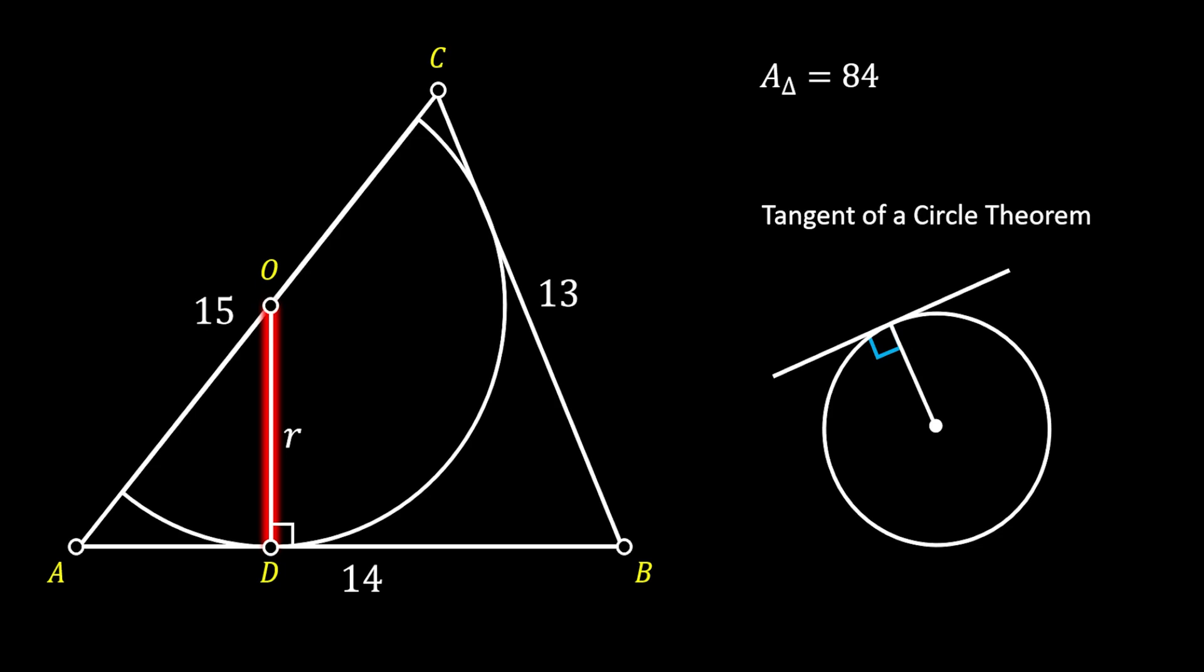Now, let's again rotate our radius but this time to the intersection point with the line CB. We can label this point as E. As you can probably notice, we can again use our tangent of a circle theorem.